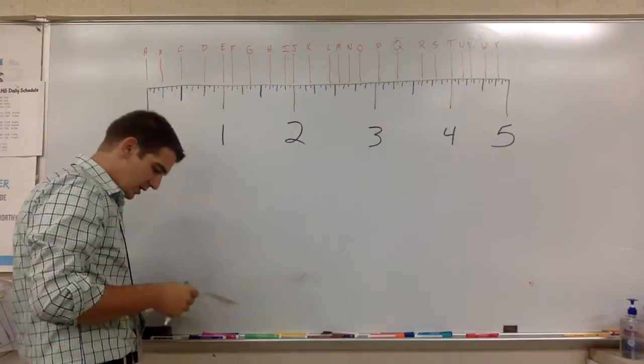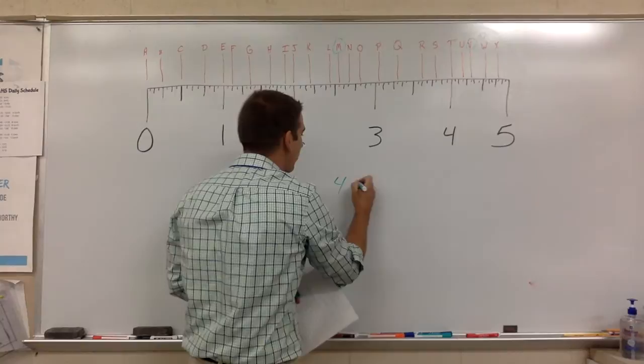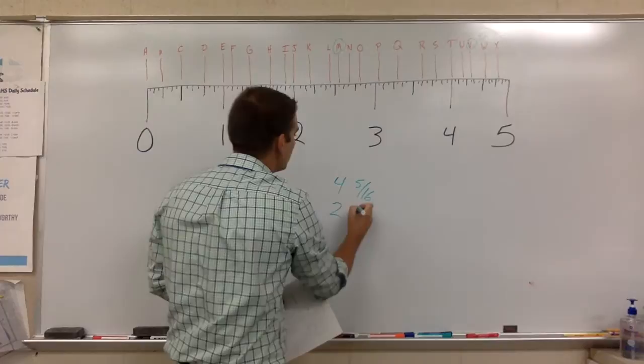Let's do one more for you, and then we will send you on your way. How about number 40? This time, we're going to do V. We're going to do M. So, V is going to stay the same, four and five sixteenths. M, it looks like two and nine sixteenths.